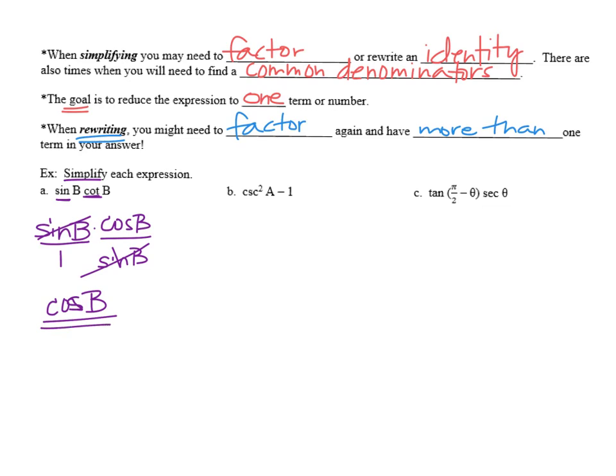Let's try the next one. Cosecant squared A minus 1. Taking a look at all the identities on the other page, when I see cosecant squared minus 1, that leads me to the Pythagorean identities. I notice that 1 plus cotangent squared is equal to cosecant squared.